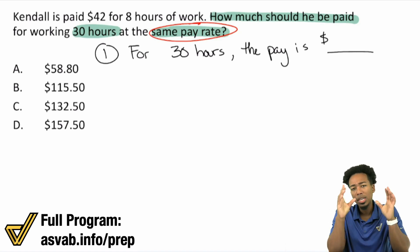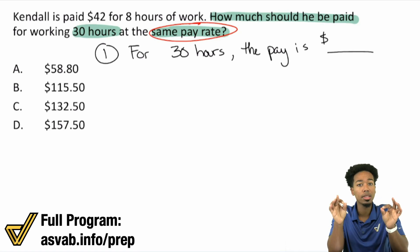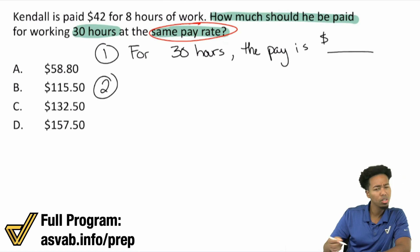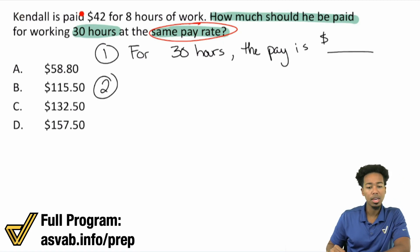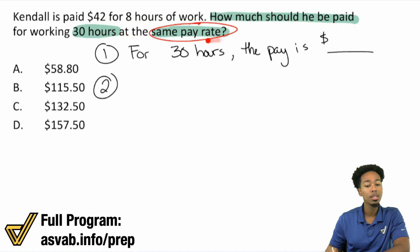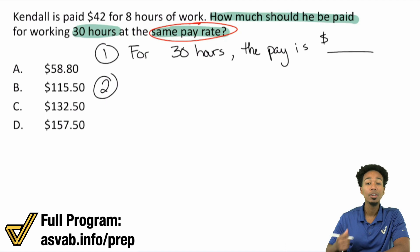If we take a look at the context, we're going to confirm that this is a proportion problem. When we look at the information: Kendall is paid $42 for eight hours of work. So we have the dollar amount for the number of hours worked — money versus time. Then we see how much money should we have for this much time at the same rate. When you're comparing the same things in the same way, you're dealing with a proportion.